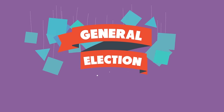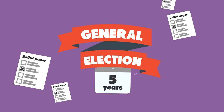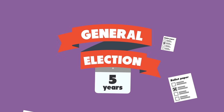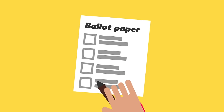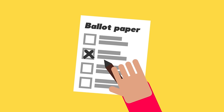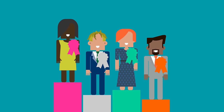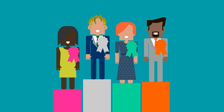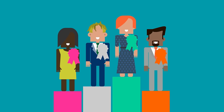General elections take place in the UK usually once every five years, and every seat is up for grabs. On polling day, voters make a choice from a list of candidates. The candidate with the most votes then becomes that constituency's MP.